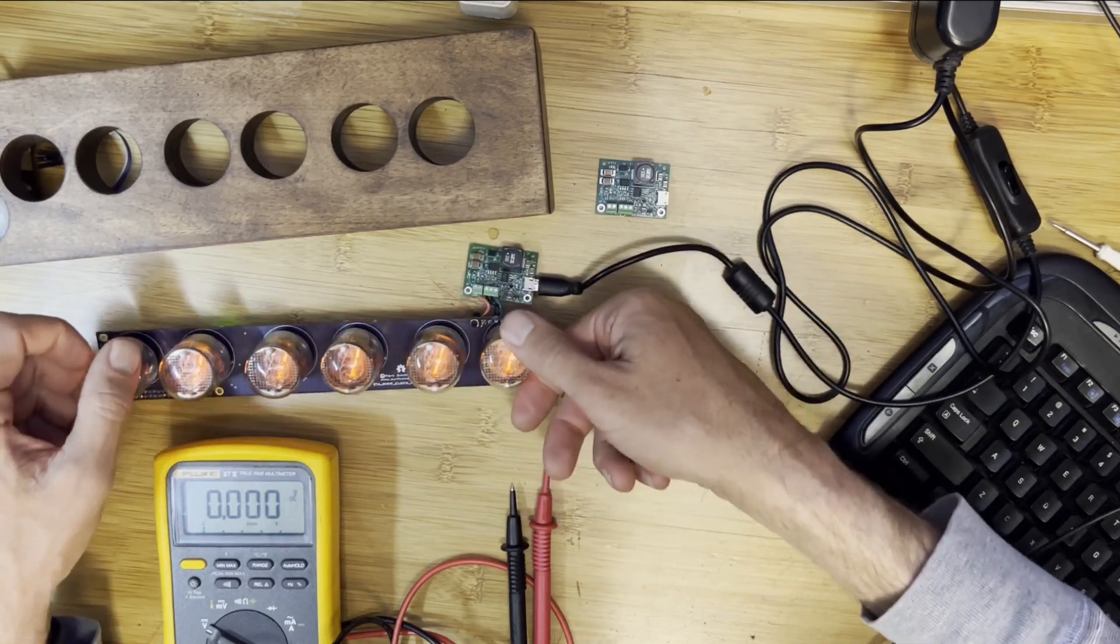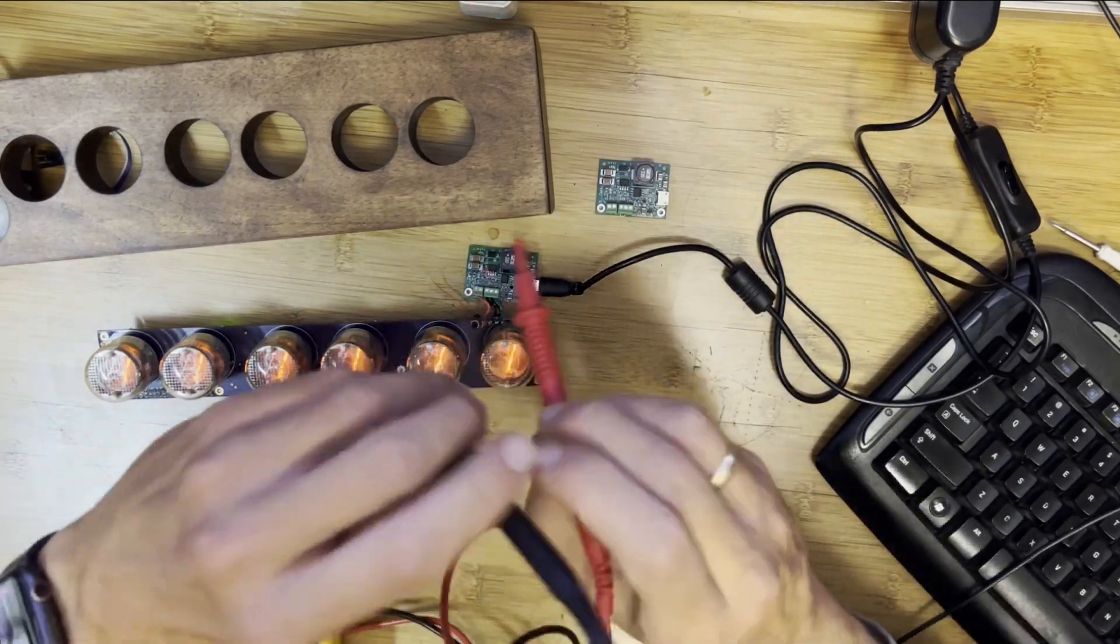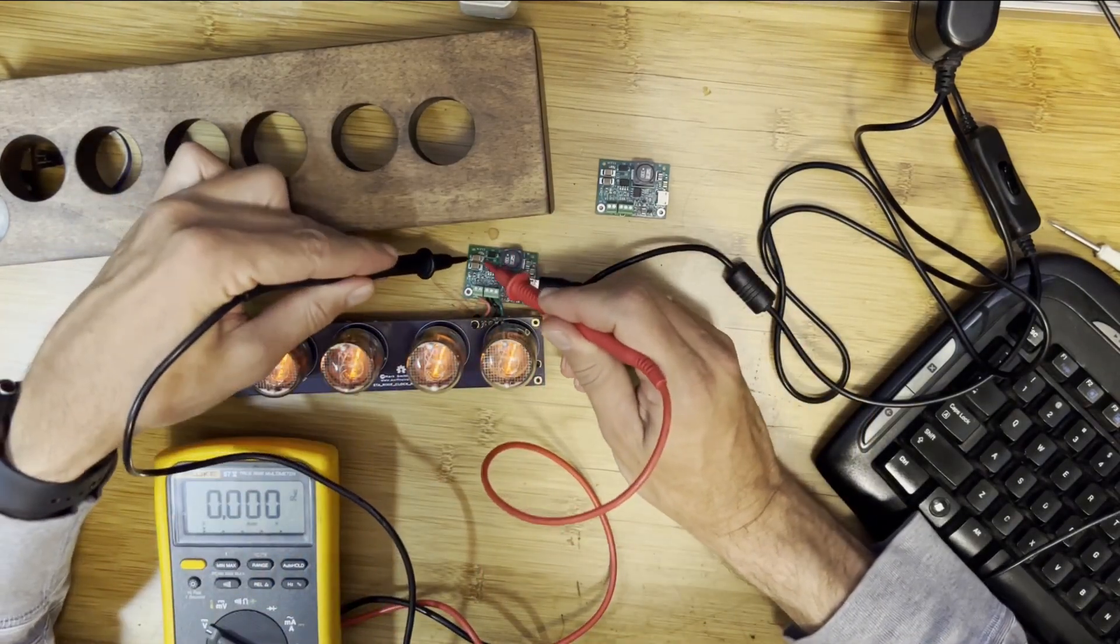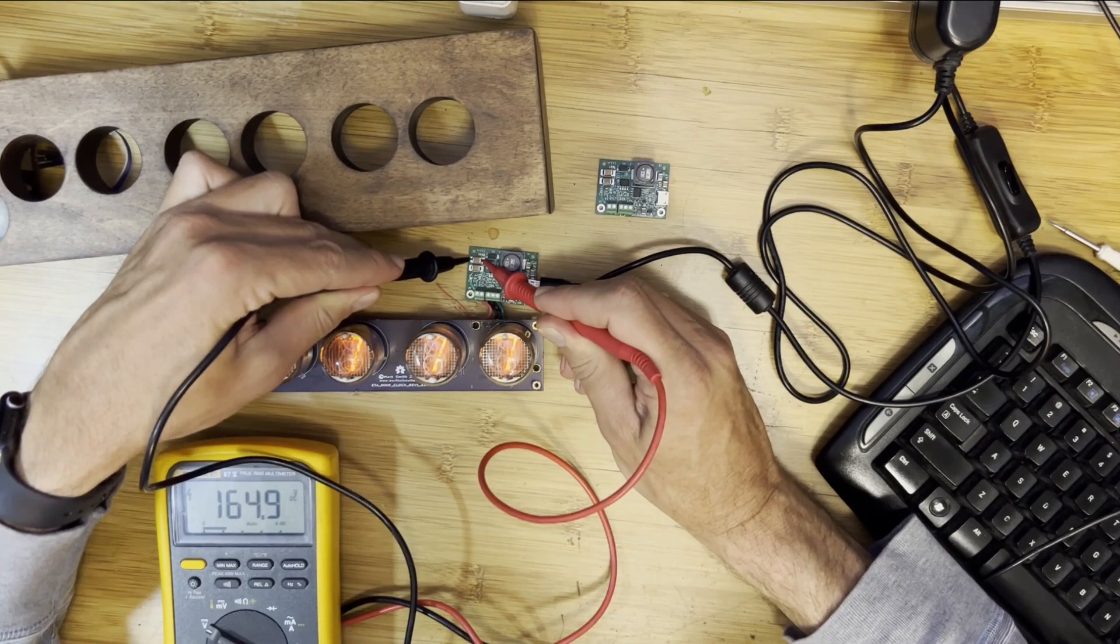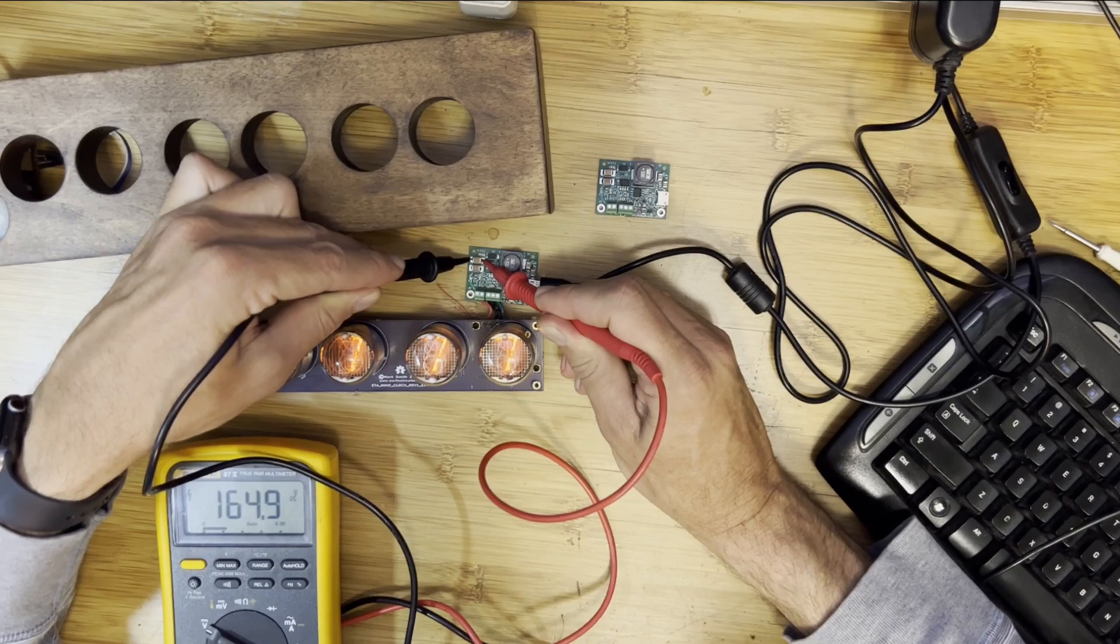In fact, if I go ahead and use my multimeter and look at the output voltage here on the powering these 6 Nixie tubes, we see 164.9 volts shown there.